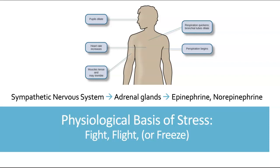To recap what is happening when we are in a state of stress: when our sympathetic nervous system becomes activated in response to a stressor, that causes epinephrine and norepinephrine to be released from the adrenal glands, and that causes the physiological changes we associate with fight-or-flight. Epinephrine and norepinephrine can also be called adrenaline and noradrenaline, so you may see it worded that way — it's the same thing.